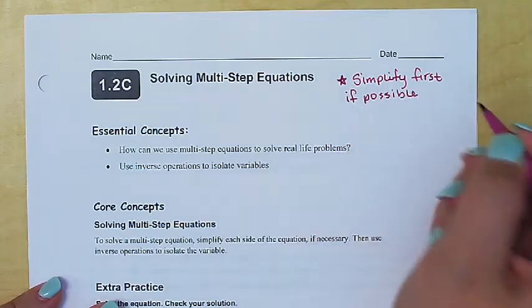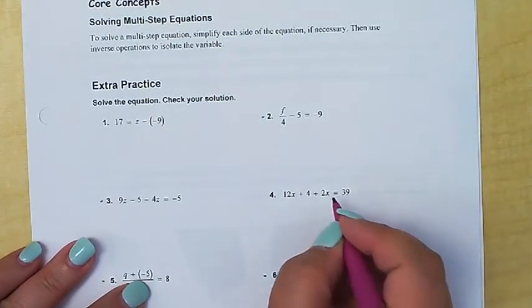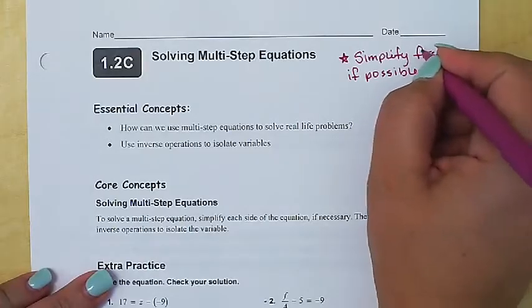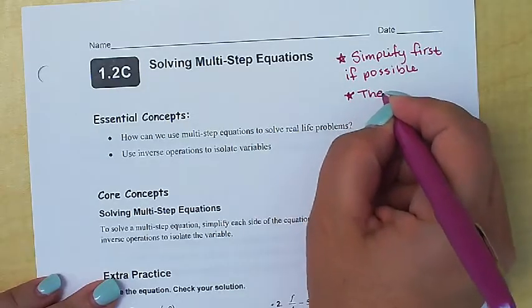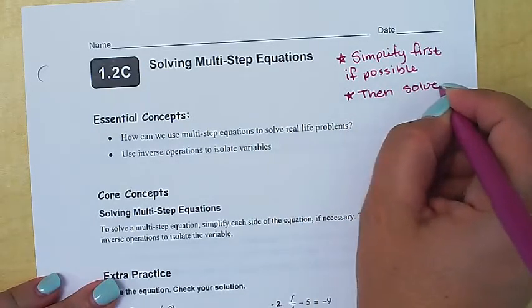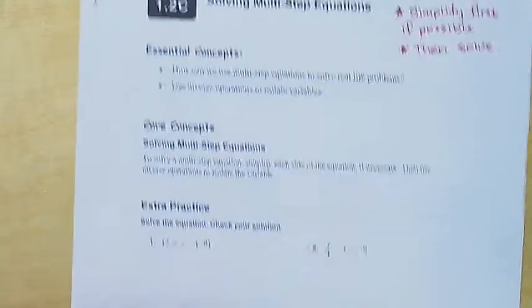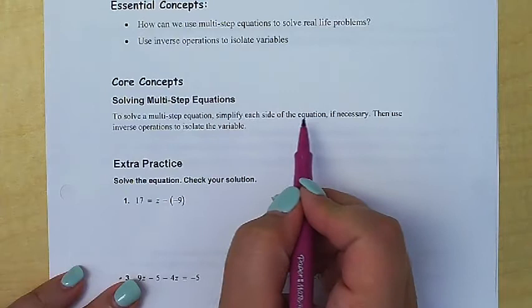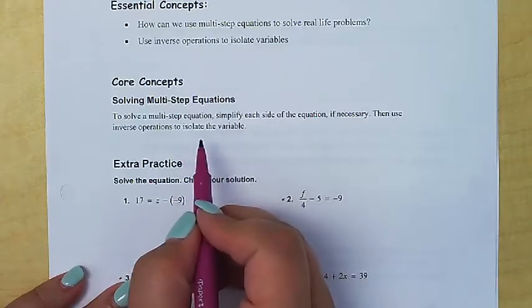Simplify first, if possible. That means basically if you see a grouping symbol where you have to distribute, take care of that. If you see like terms on the same side that can be combined together, take care of that. Then after you have simplified completely, then we solve like we have been. This is really the added layer to today's lesson. To solve a multi-step equation, simplify each side of the equation first if necessary, then use inverse operations to isolate the variable.